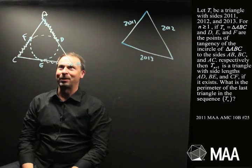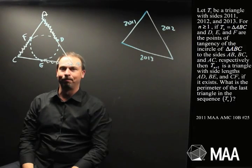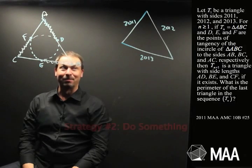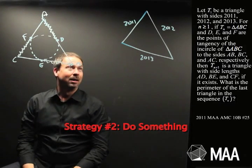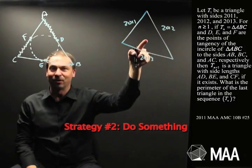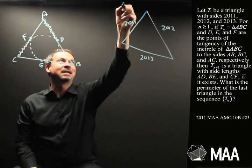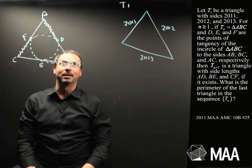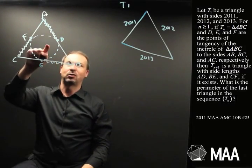Well, I have no idea what to do. This is very strange. Well, strategy number 2 comes to mind, which is just do something. We've got a first triangle. I might as well just do this to that first triangle and get T2s. That's T1. Let's get T2 from this.